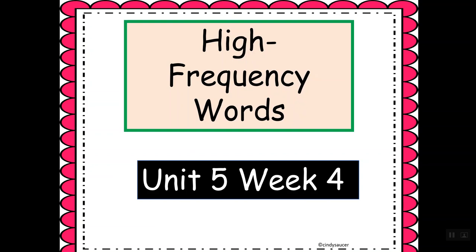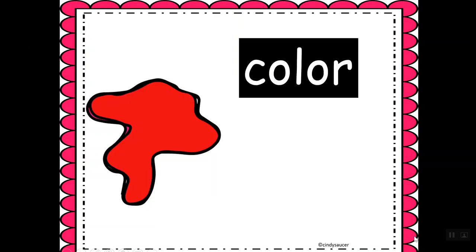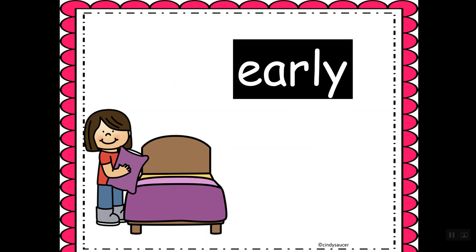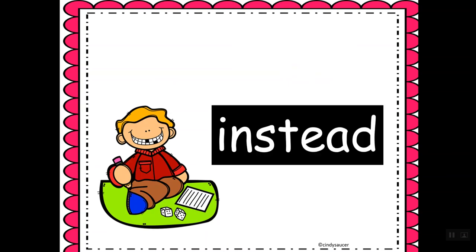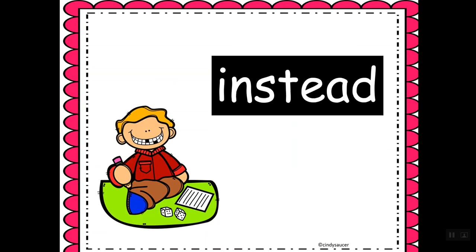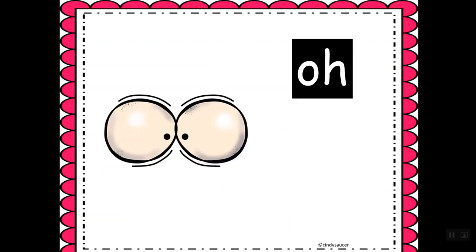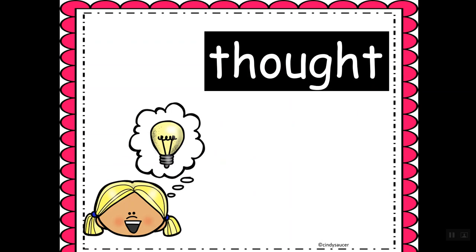Today we're going to go over our high frequency words for Unit 5, Week 4. Our first word is color. Our next word is early. Instead. Red. Nothing. Oh. Thought.